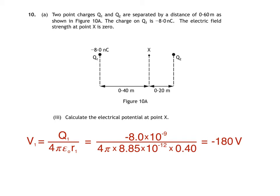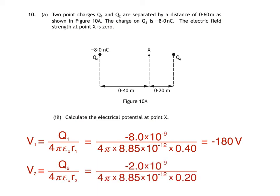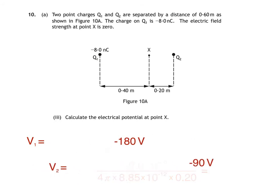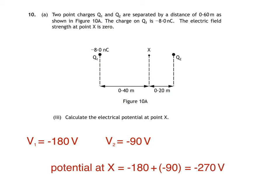We then use the same equation to find electrical potential due to charge 2, substituting different values for charge Q and distance R. This gives us a value of negative 90 volts. We've still not found our final answer, although we are running out of room a little, so we'll give ourselves a little more space by moving our values of V1 and V2 up a bit. Finally, to find the electrical potential at X, we simply add these two values, giving us an answer of negative 270 volts.